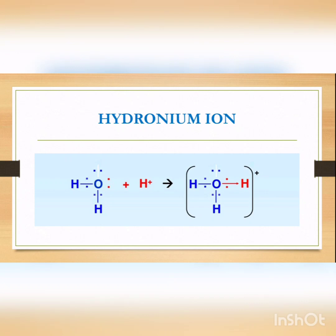This is the structure of the hydronium ion. It is very important from the next chapter's point of view — acids and bases. What is an acid? An acid is defined as a substance which, when dissolved in water, is capable of producing hydronium ions. The hydrogen ion reacts with a water molecule to give hydronium ions. This structure is very important from the exam point of view, and electron dot diagrams are very important here.